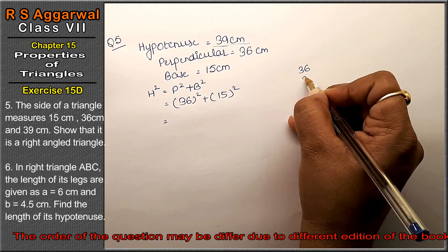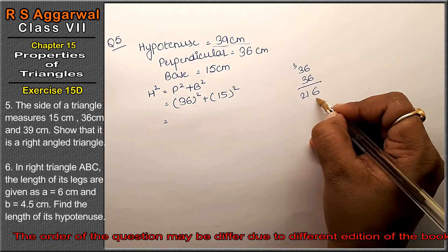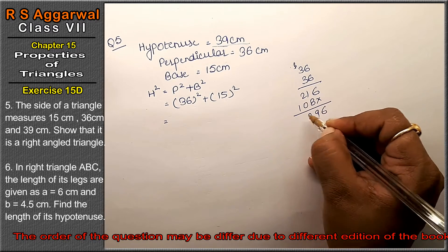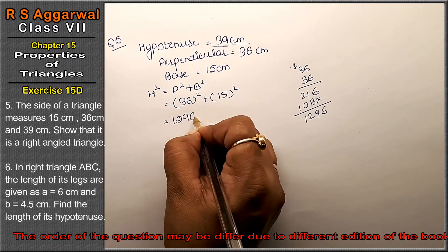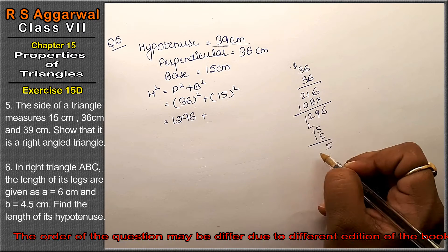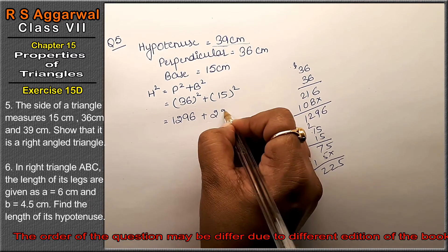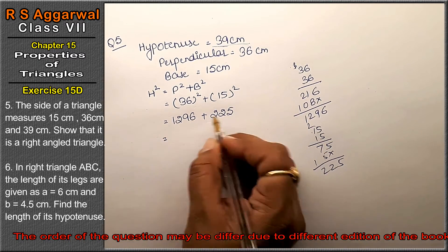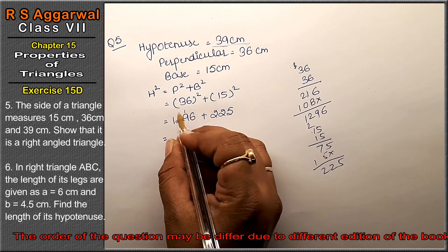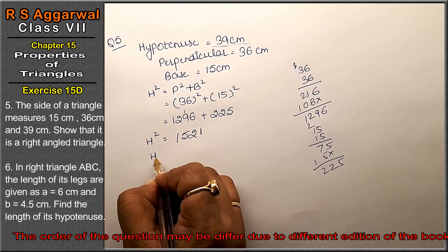Let's compute: 36 into 36 gives 1296, and 15 squared gives 225. So H square equals 1296 plus 225, which equals 1521.